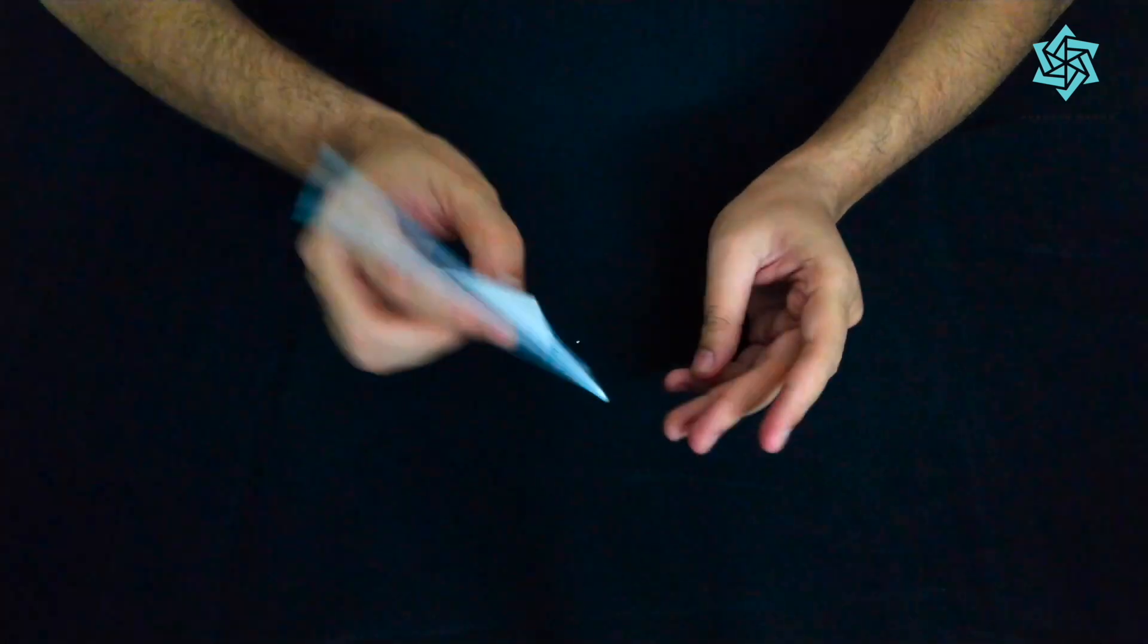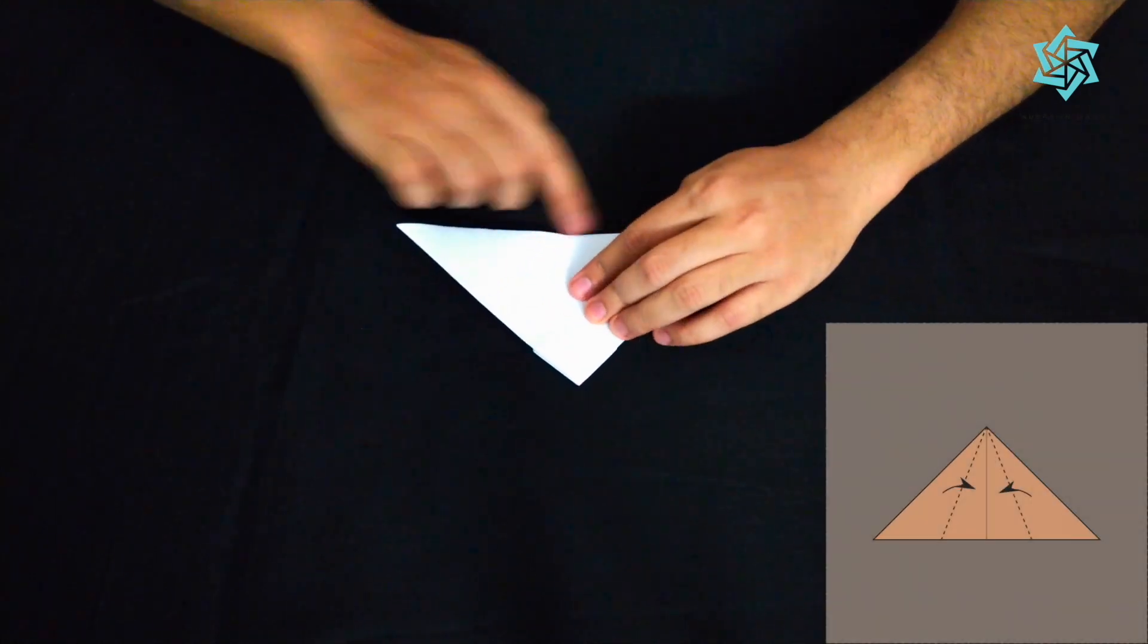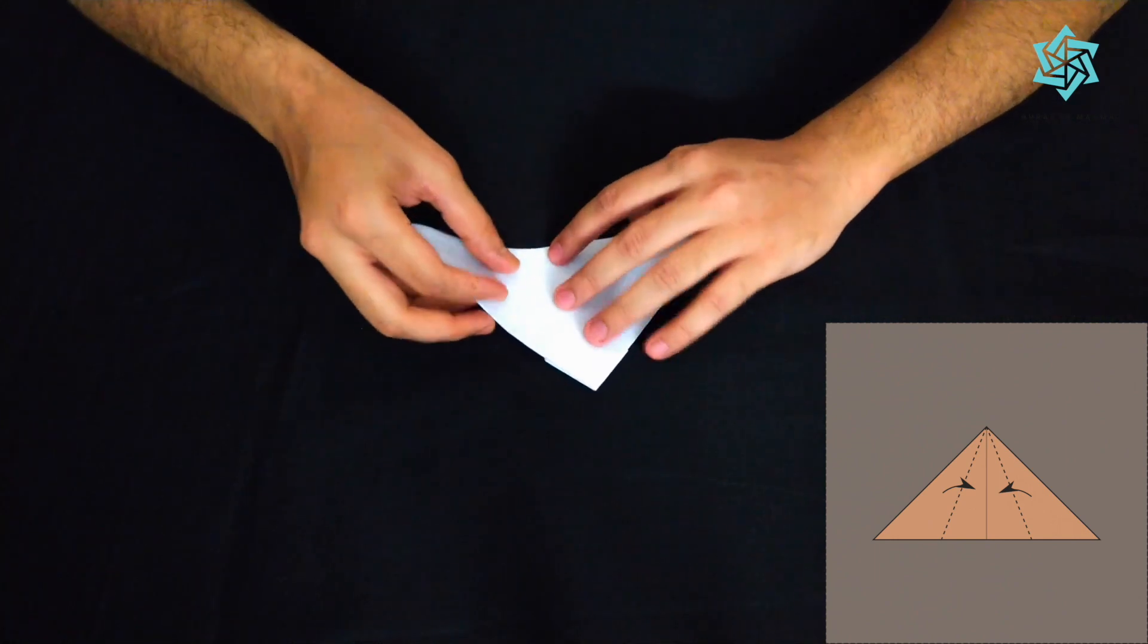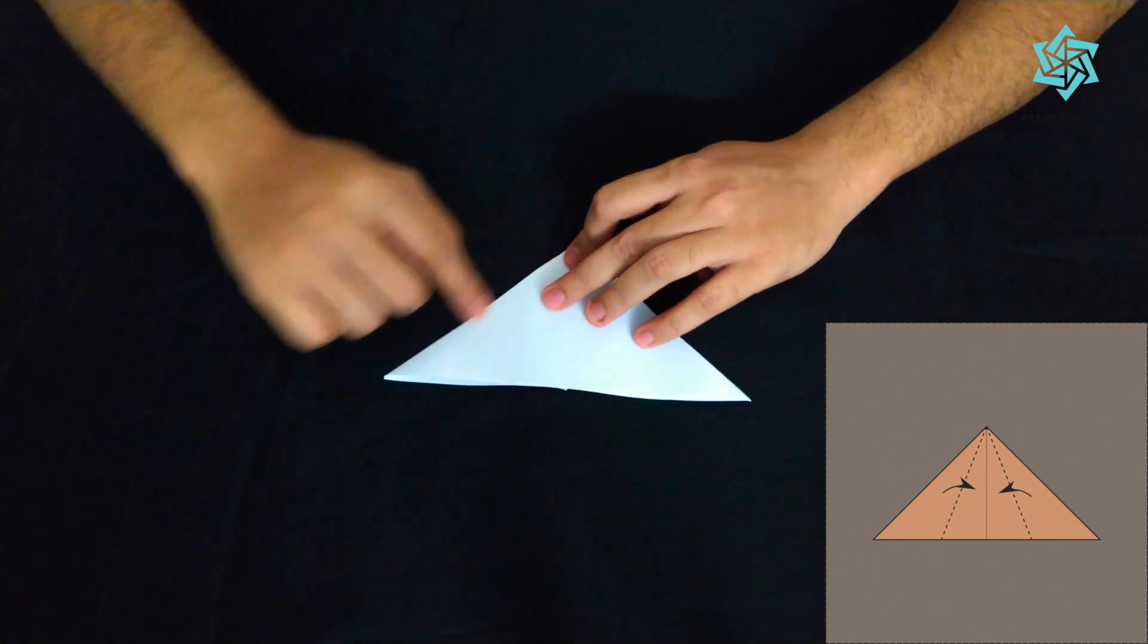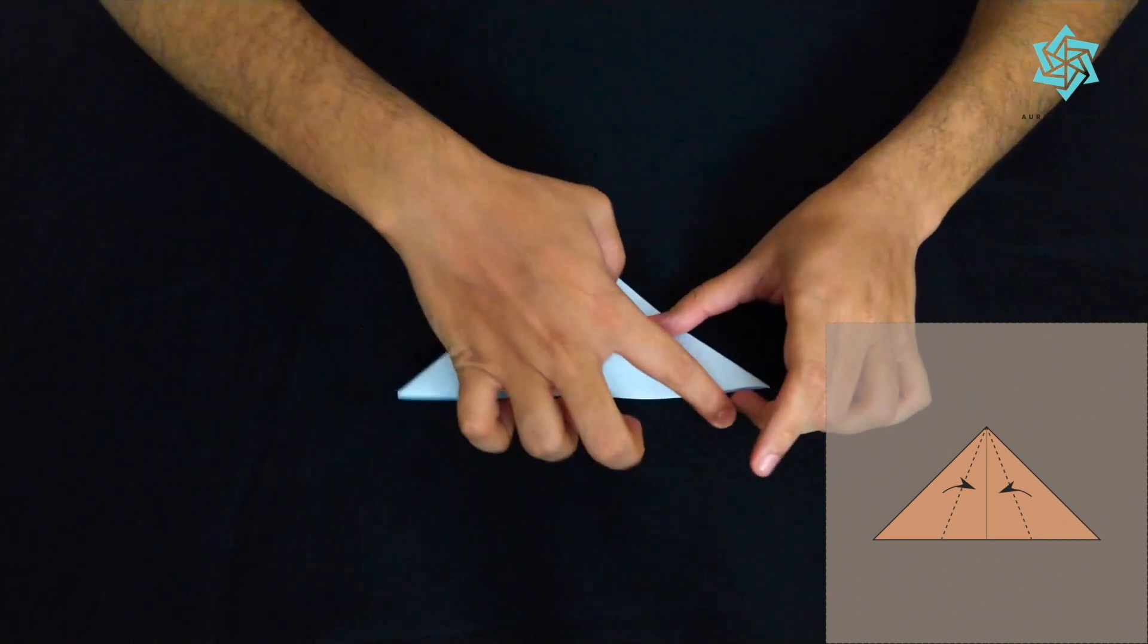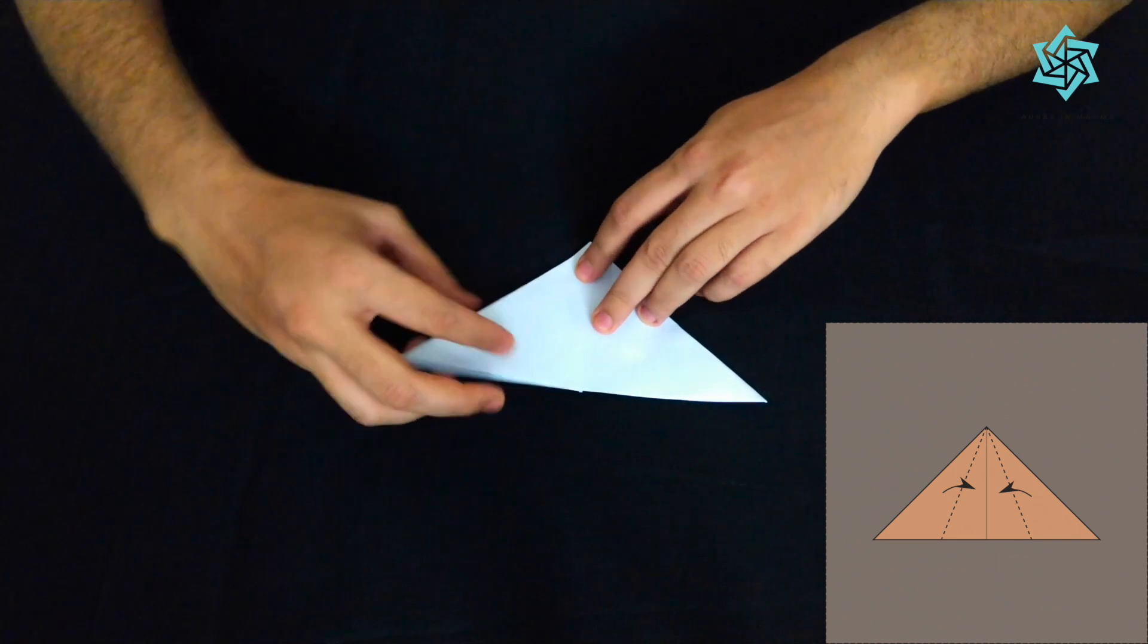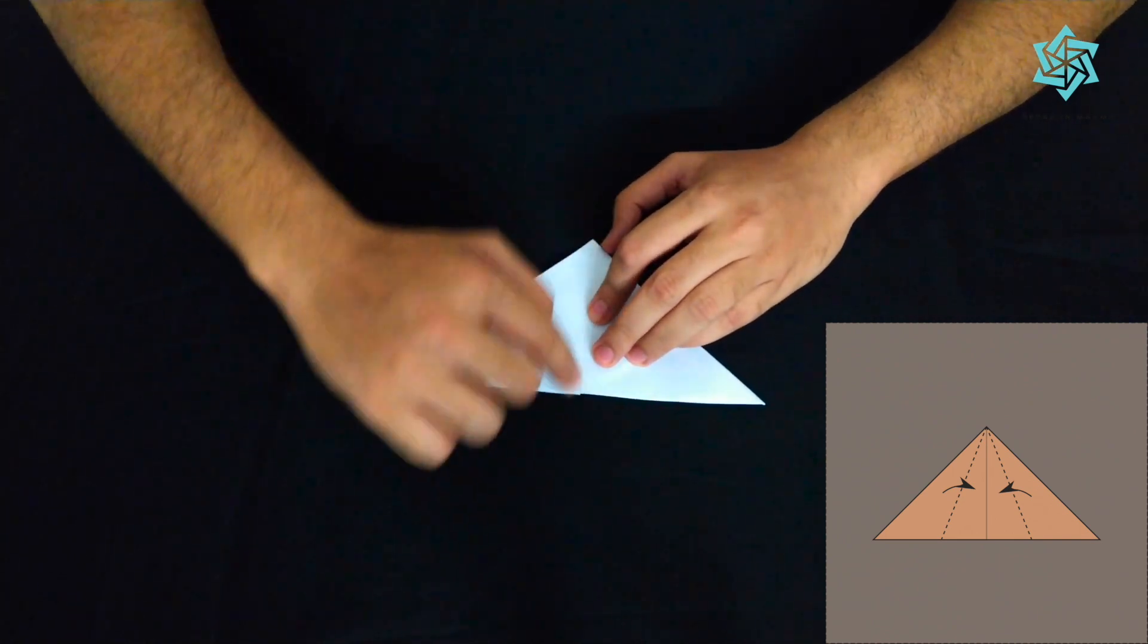Now we turn this over and after turning this over, this wide side we'll take it and we actually want to fold it on the other direction. So this side, see this is the triangle. So there's this base of the triangle and there are these two sides. So we'll take this side and we'll actually put it on this half line. So this side on this half line.